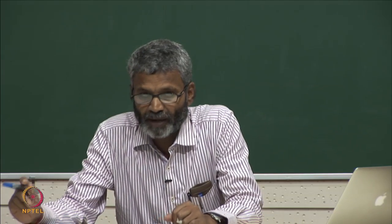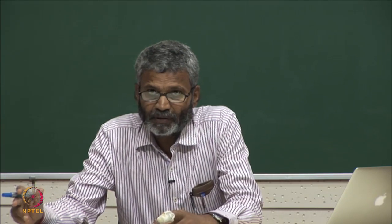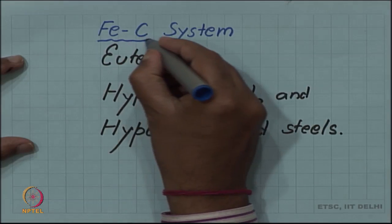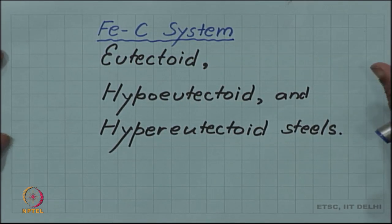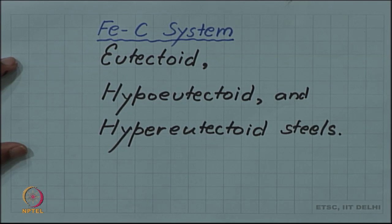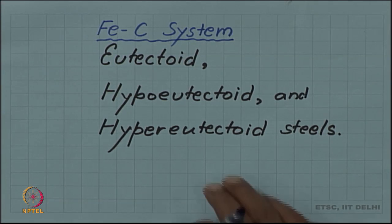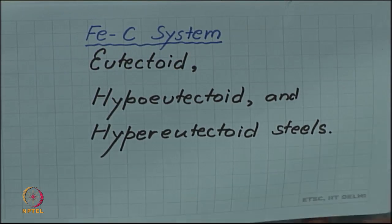We are talking about the iron-carbon system. In the last video we saw the phase diagram of the iron-carbon alloy system — a very important alloy system because iron-carbon is what gives us steel, the most important engineering alloy. We looked at the entire phase diagram and saw that there are three different invariant reactions: a peritectic reaction at very high temperature, an eutectic reaction at an intermediate temperature, and a eutectoid reaction at a lower temperature. That eutectoid reaction is one of the most important reactions for control of microstructure in the iron-carbon system.